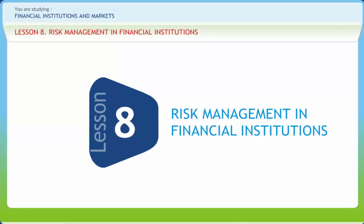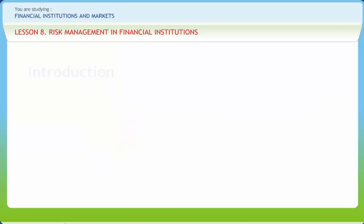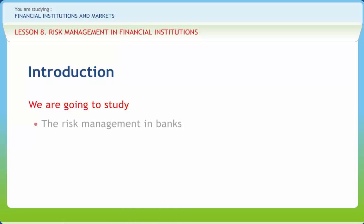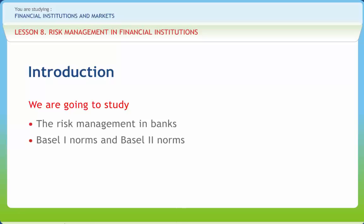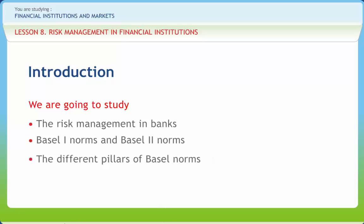Risk Management in Financial Institutions. We all know that financial institutions exist to improve the efficiency of the financial markets. In this lesson, we will learn risk management in banks, Basel 1 norms and Basel 2 norms, and the different pillars of Basel norms.